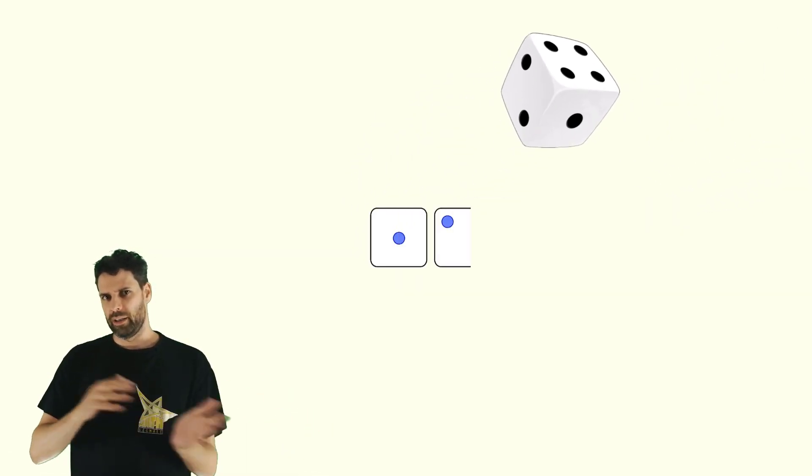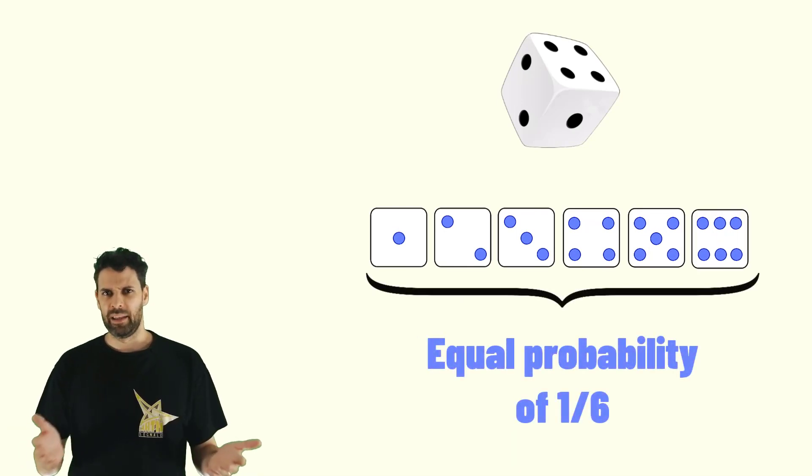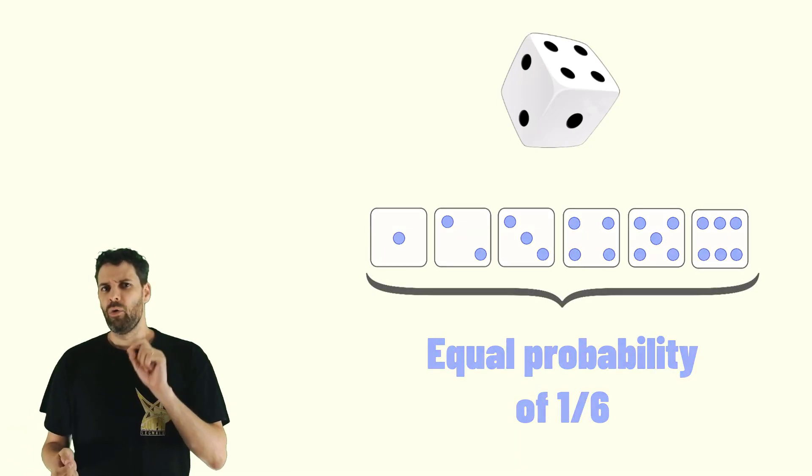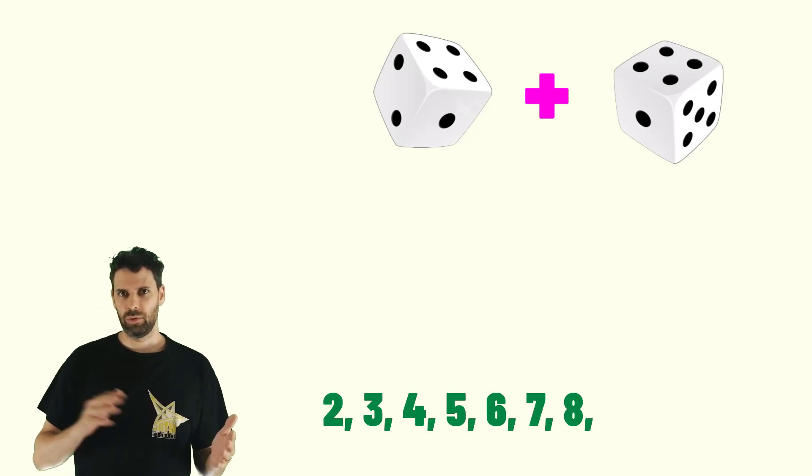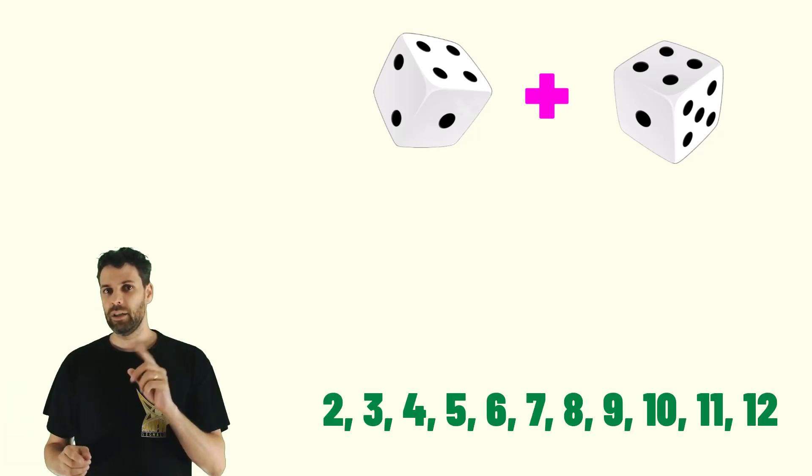If you roll one of them you can obtain numbers from 1 to 6 with the same probability. But what if you roll two dice and you add up the results?